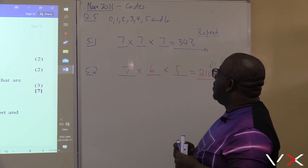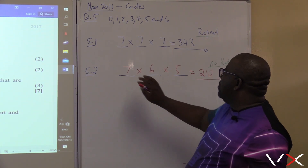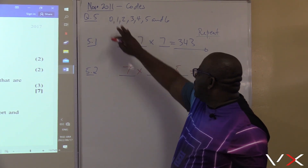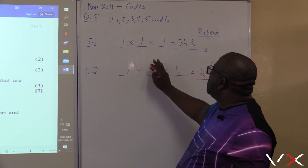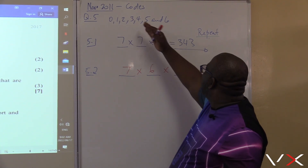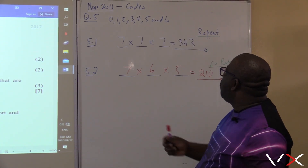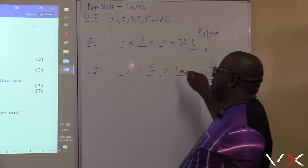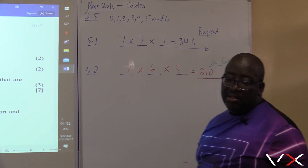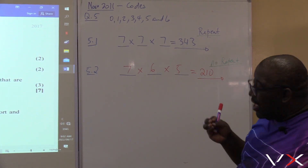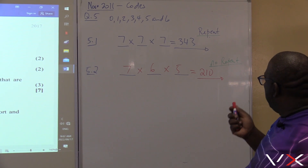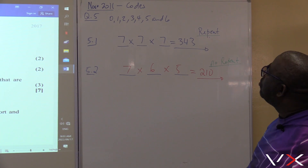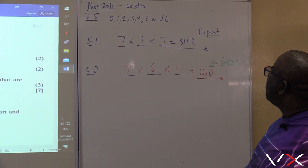So that's how we do this one. Here the repetition is not allowed — this one has already been taken. So how many options will we have? Six. Two are taken, so the next one will have five options. We're looking at options, not the actual codes. So we've got 210 possible codes from those seven digits.